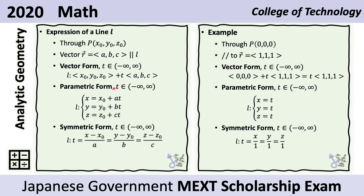The parametric form is a rearrangement of the vector form. The vector form gives three separate equations corresponding to each component: x equals x-sub-o plus t times a, y equals y-sub-o plus t times b, and z equals z-sub-o plus t times c. We can convert the parametric form to the symmetric form by isolating the parameter t — moving x-sub-o to the other side and dividing by a gives t equals x minus x-sub-o all over a. Doing the same for the second and third equations gives us the symmetric form.